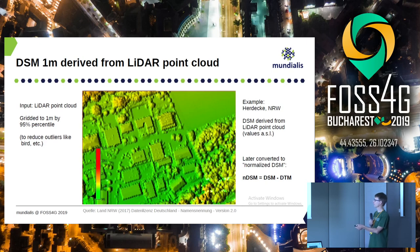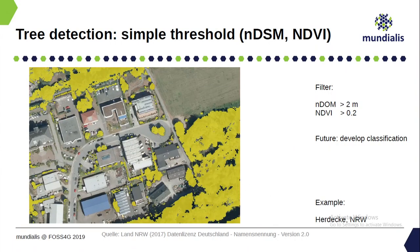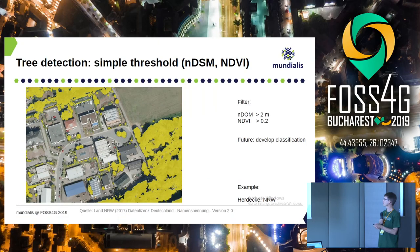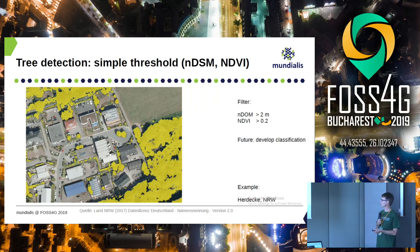This is absolute height above sea level. We then create a normalized surface model by subtracting the elevation model — the ground — so we have only the relative differences. Even with simple thresholding — show me everything above 2 meters — and only show if it's green using the vegetation index, we get all the major vegetation structure. We had red and infrared channels in the aerial photo, so we can easily calculate the normalized difference vegetation index, giving us major vegetation including forest and street trees.